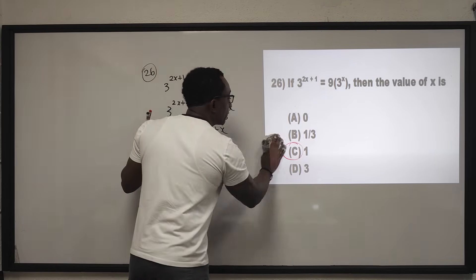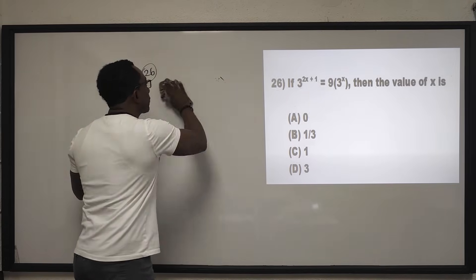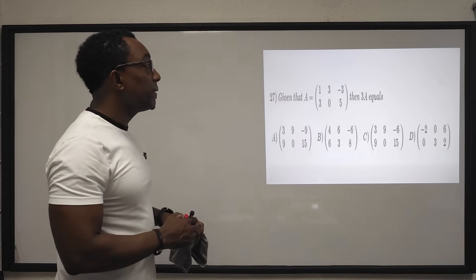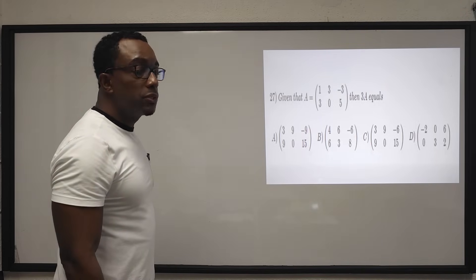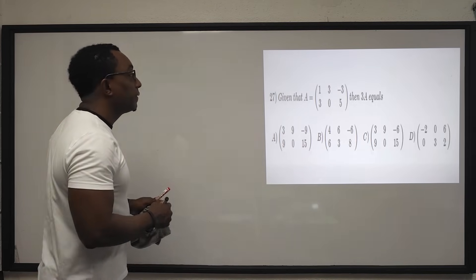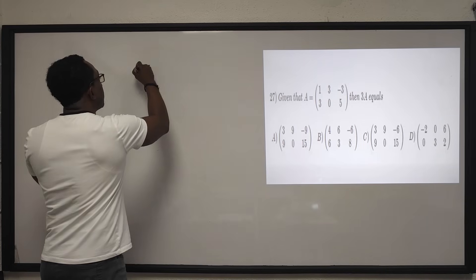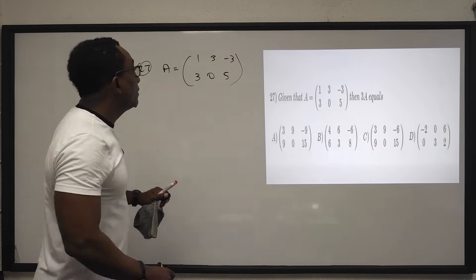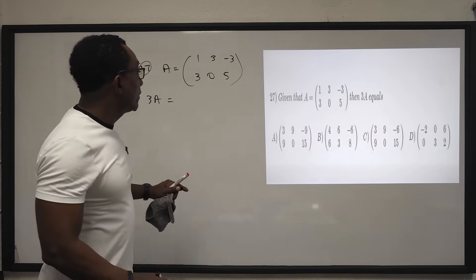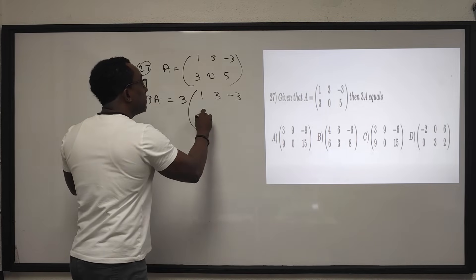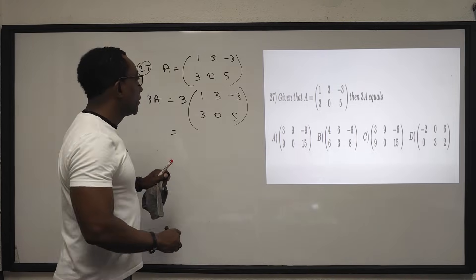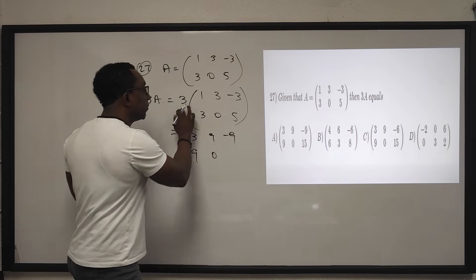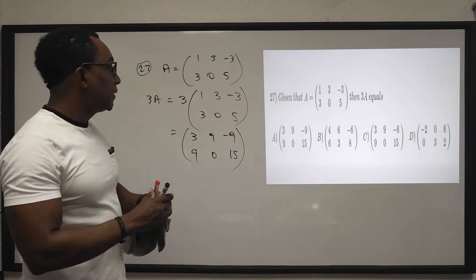Question 27: given matrix A with elements 1, 3, negative 3, 3, 0, 5 — a 2 by 3 matrix — find 3A. Multiply each element by scalar 3: 3 by 1 is 3, 3 by 3 is 9, 3 by negative 3 is negative 9, 3 by 3 is 9, 3 by 0 is 0, 3 by 5 is 15. The answer is A.